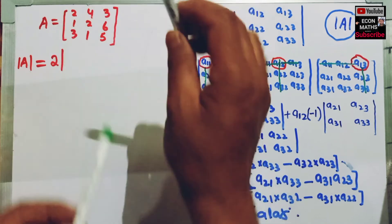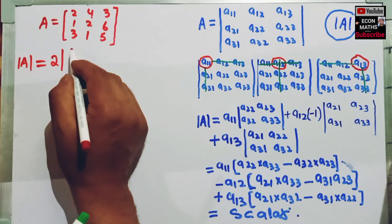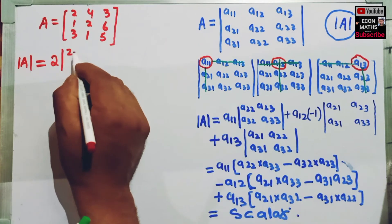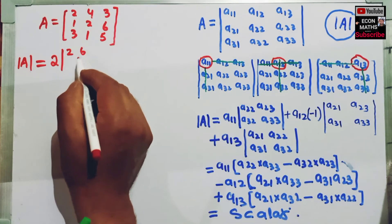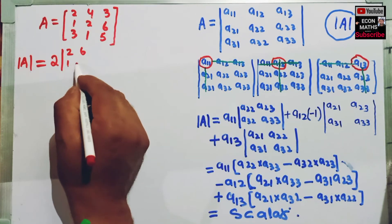The remaining elements are 2, 6, 1, 5. So I will write the 2 by 2 determinant with elements 2, 6, 1, 5.